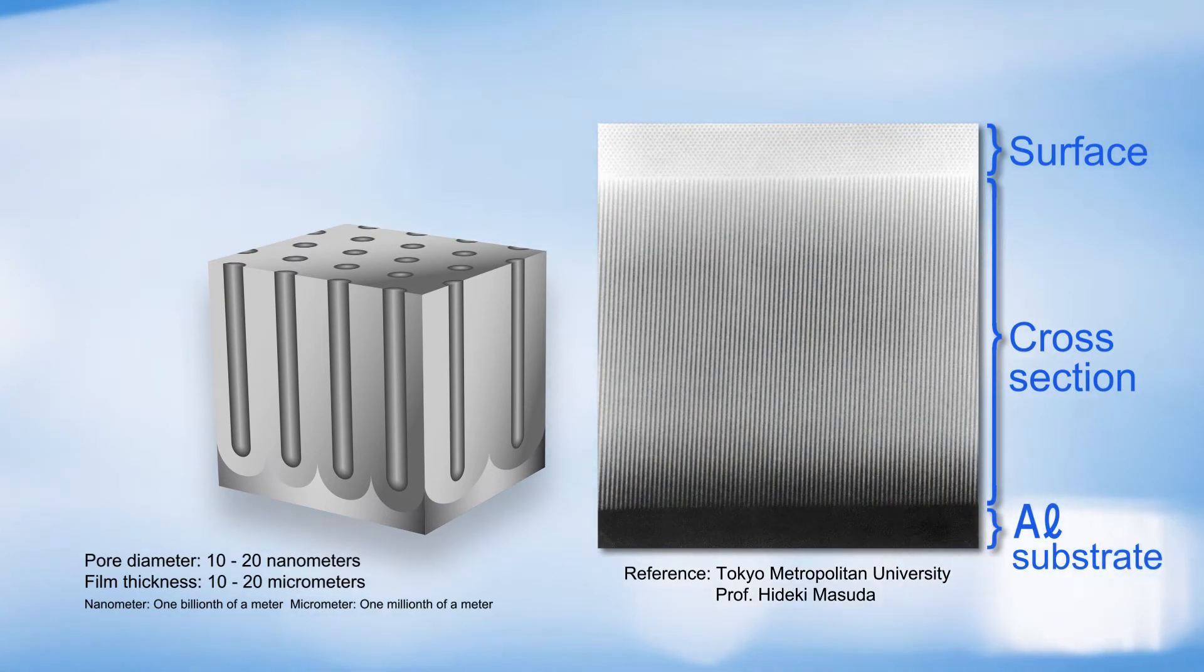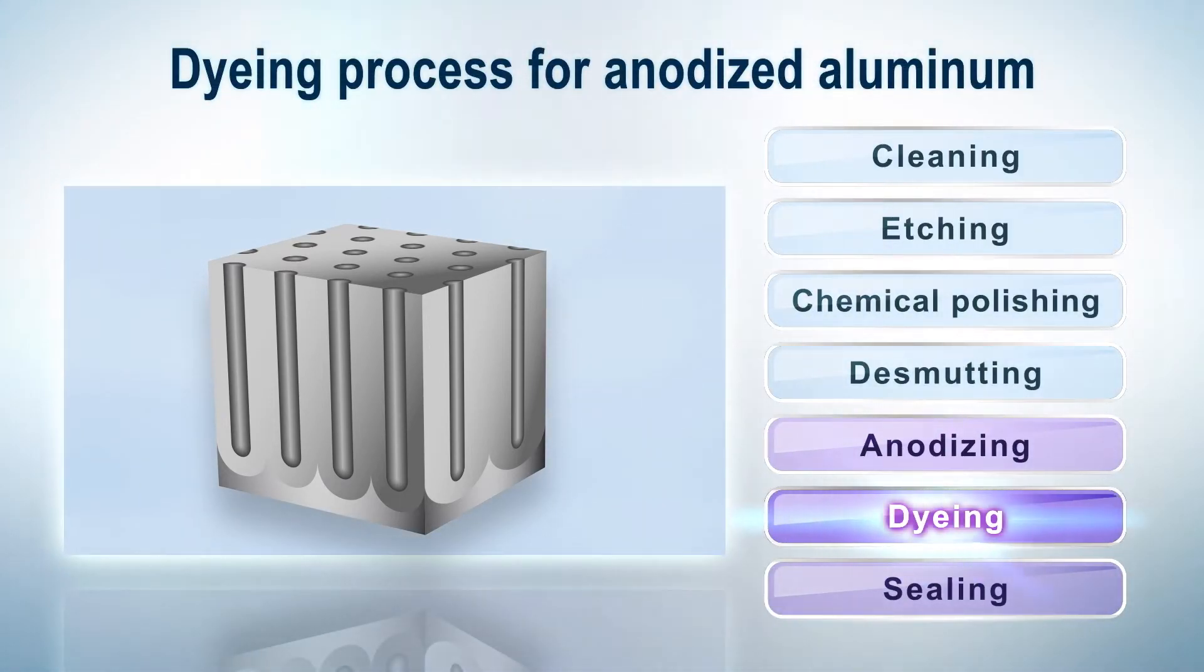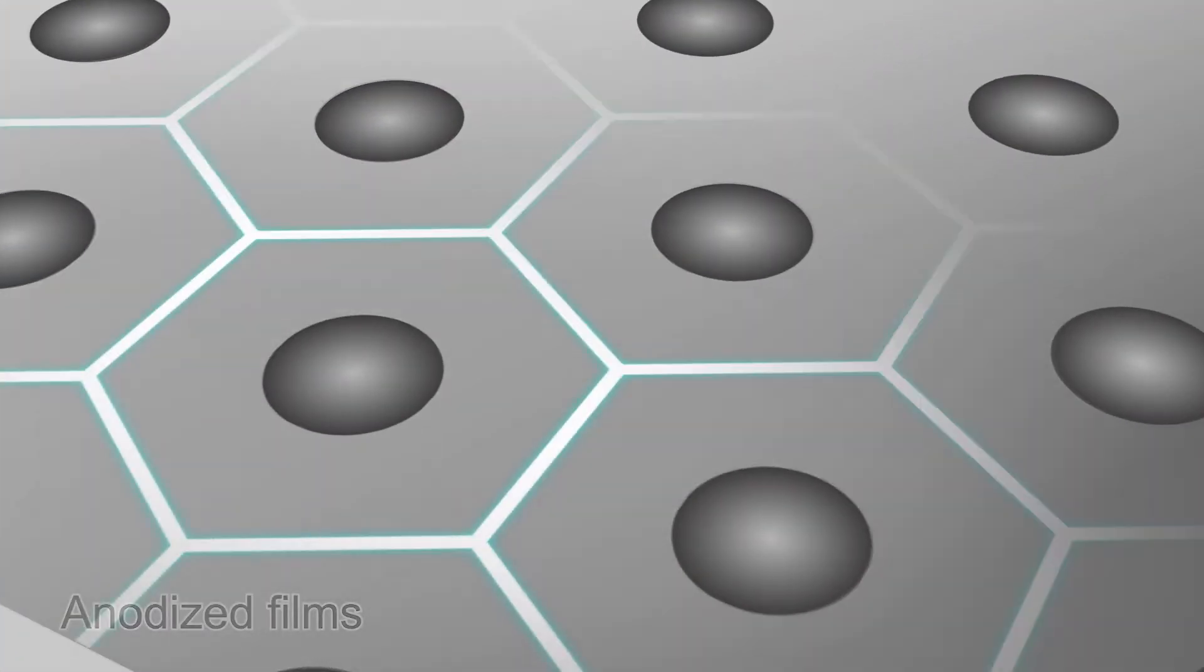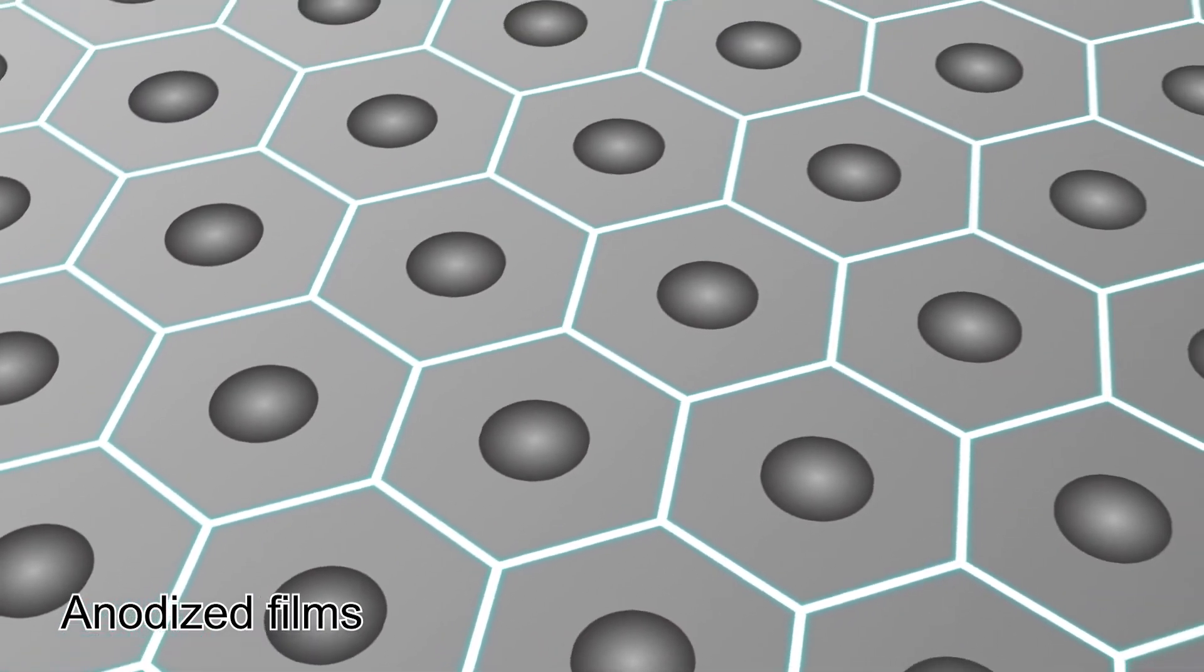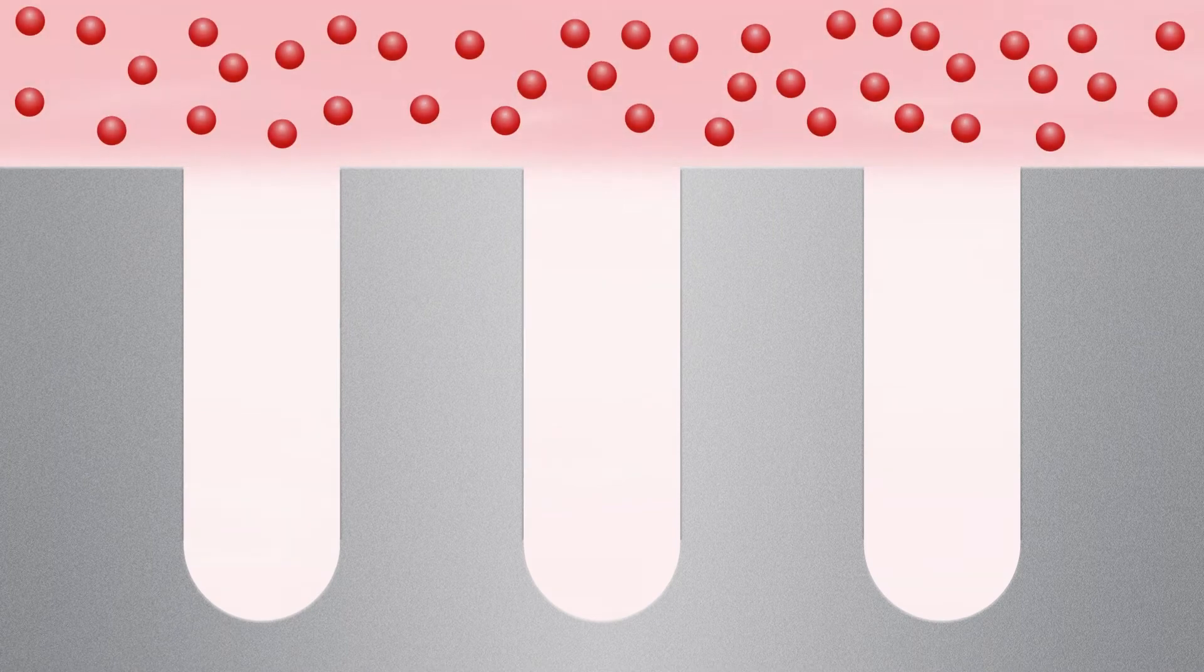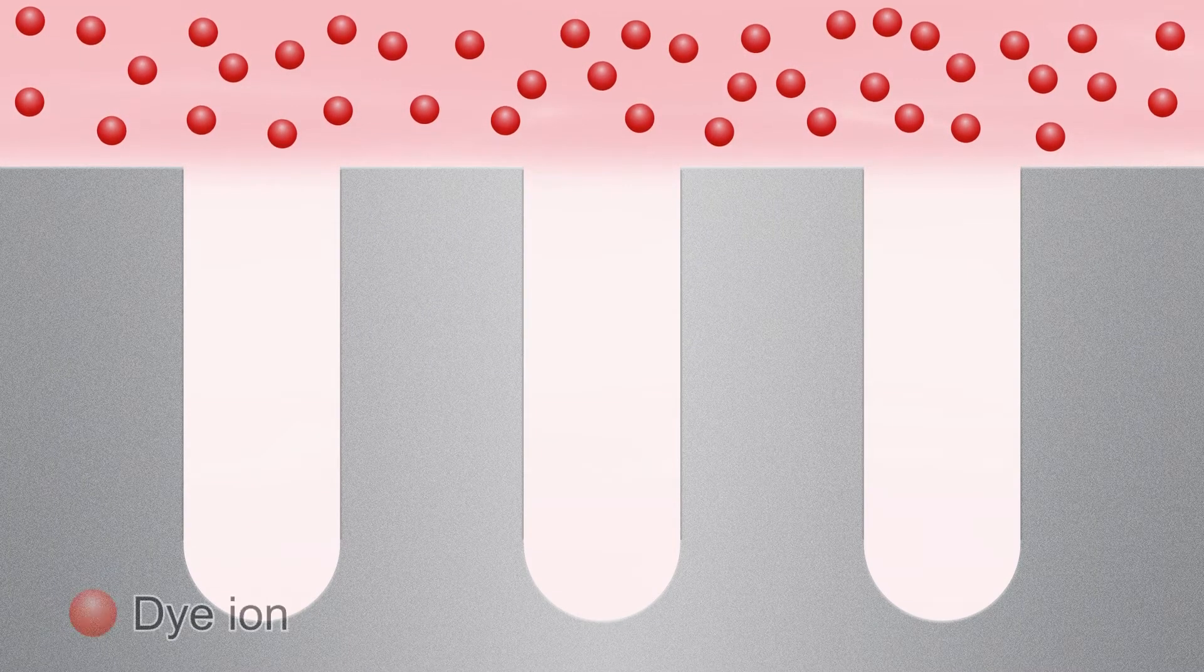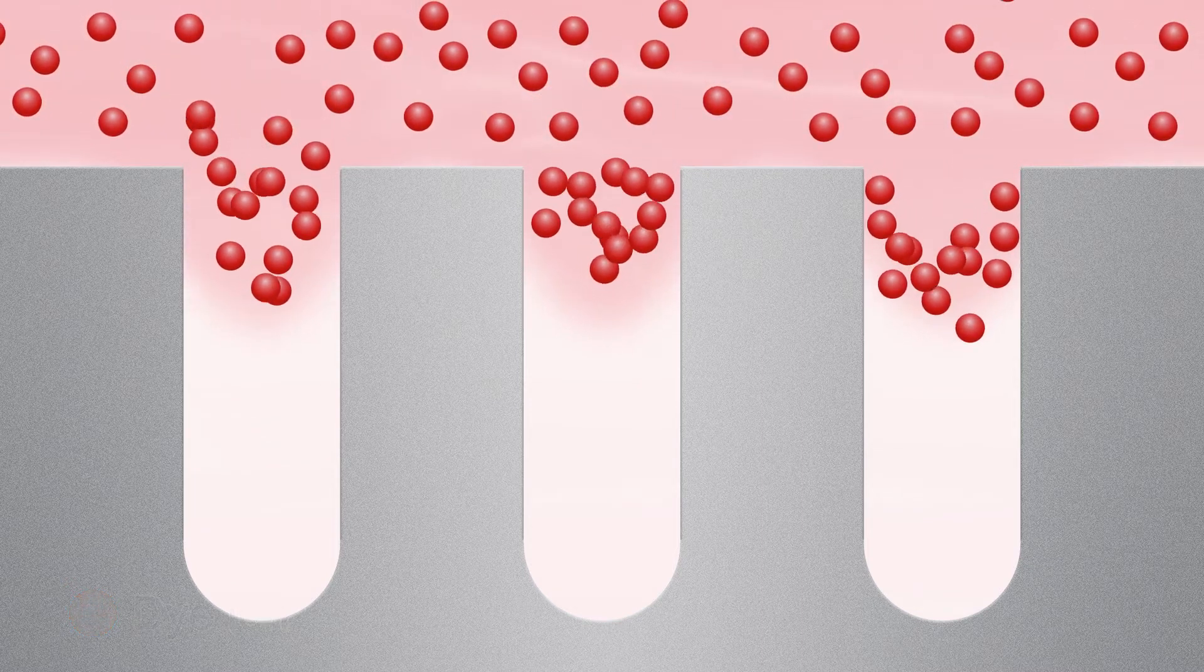Aluminum is dyed by absorbing the dyes into these infinite number of micropores. Now, let's take a look at the dyeing process. Aluminum oxide films with micropores are generally called anodized films. When anodized films are dipped into a dyeing solution, the dyes enter and are absorbed into the micropores.